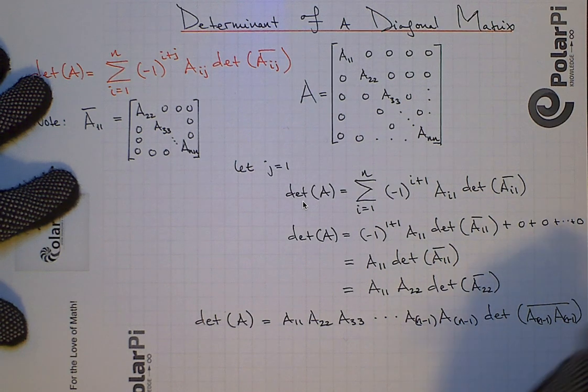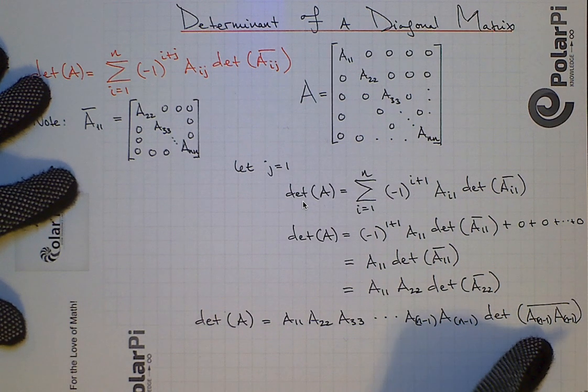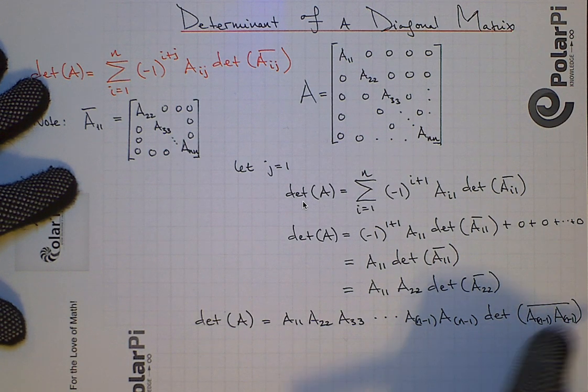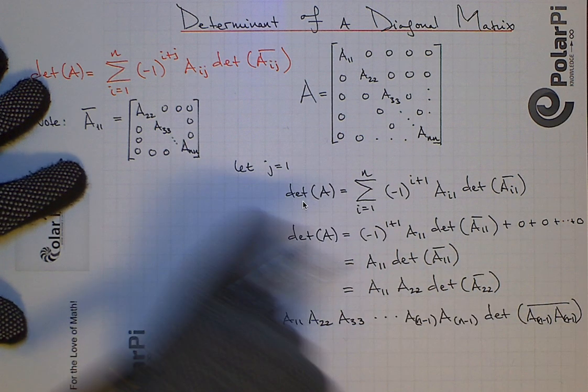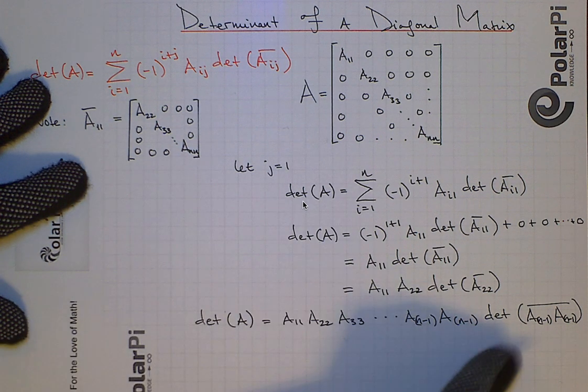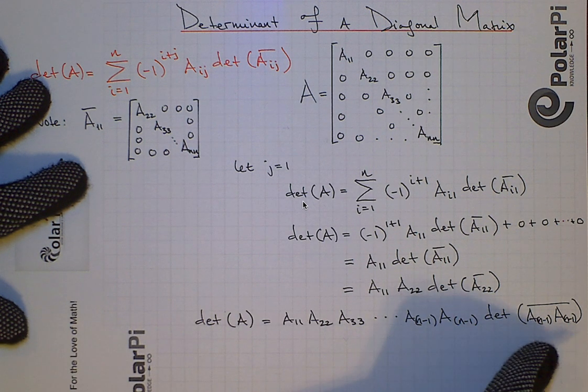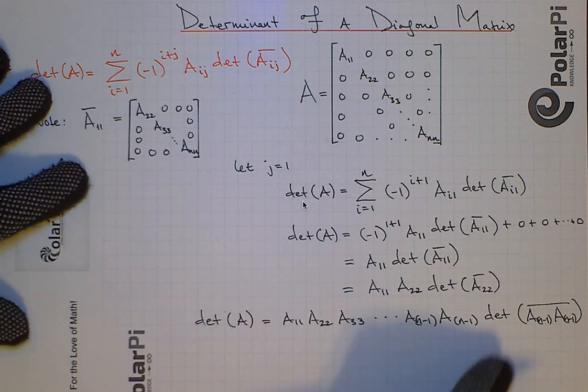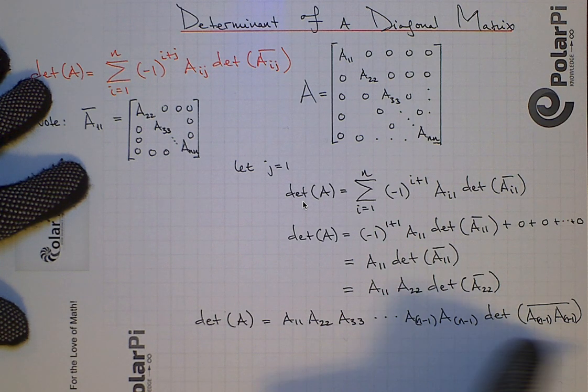But wait, the matrix that is A n minus one, A n minus one bar, this matrix is just gonna be a one-by-one matrix containing the entry Ann. And so this is just gonna be the determinant of a one-by-one matrix that just has one entry, and that entry is Ann. So by definition, this is going to be Ann.